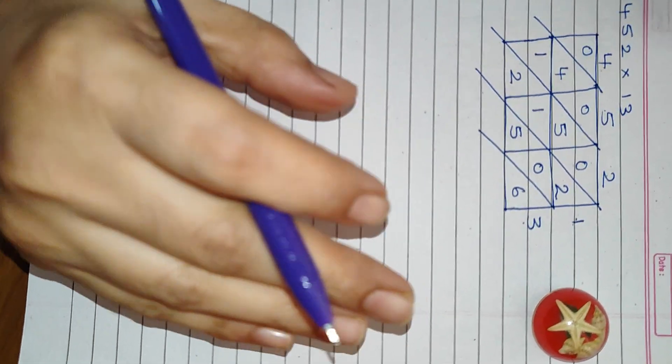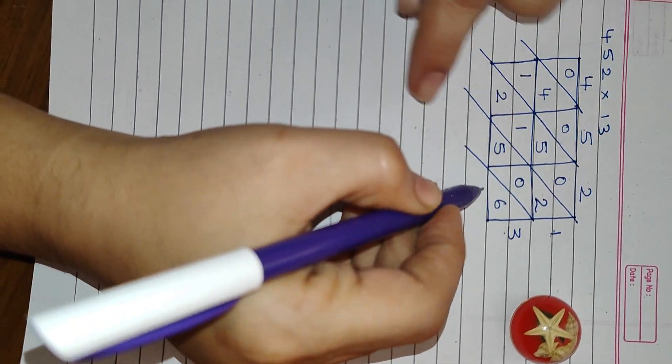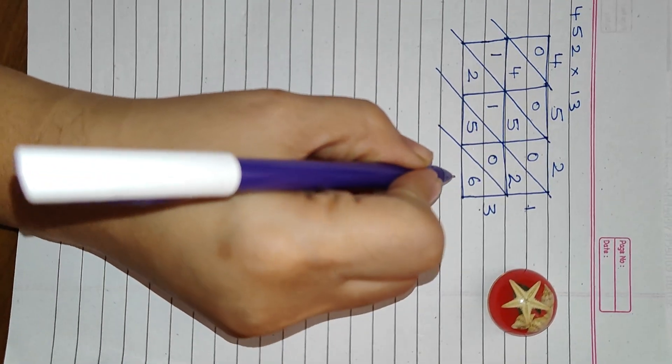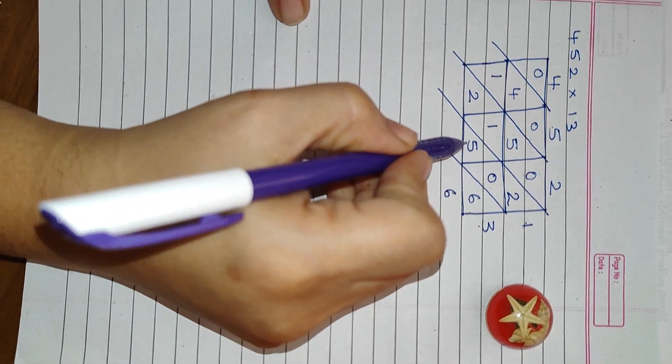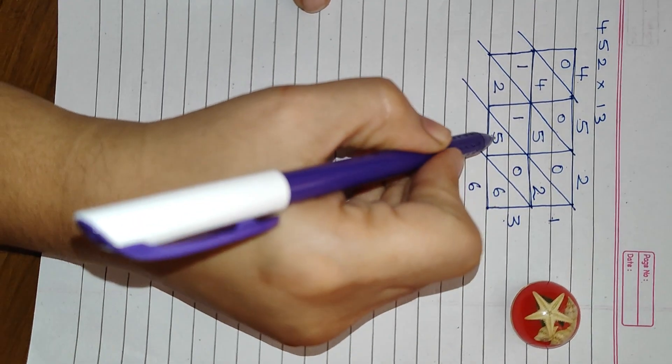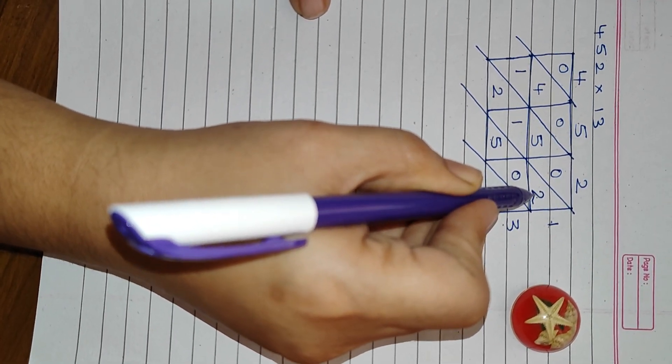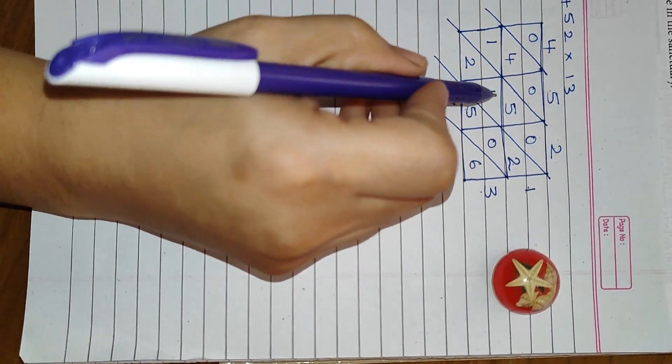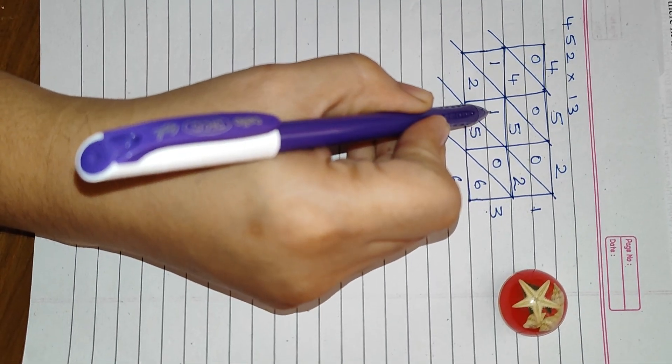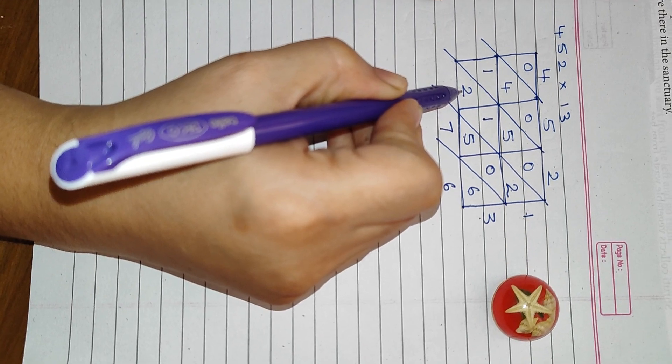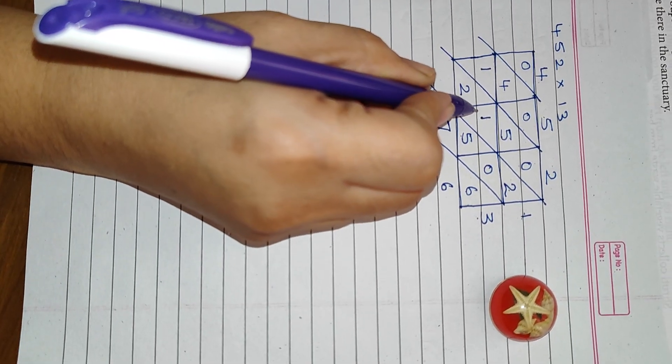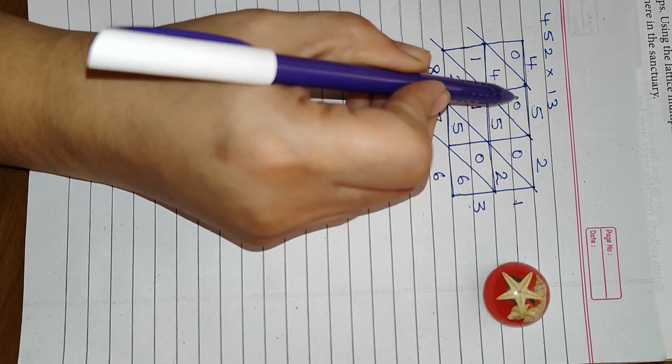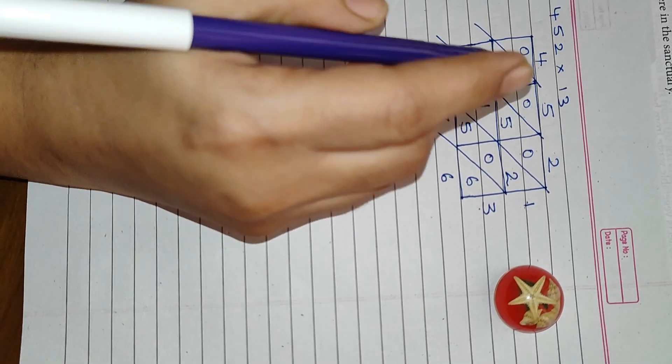Now what is the next step? You have to do the addition. This column, you see this slant column, what is the number here? 6. So you will write the 6 down. 5 and 2. 5 plus 2 is 7. Yes, 7. Now 5 plus 1 is 6. 6 plus 2 is 8. 8 comes here.